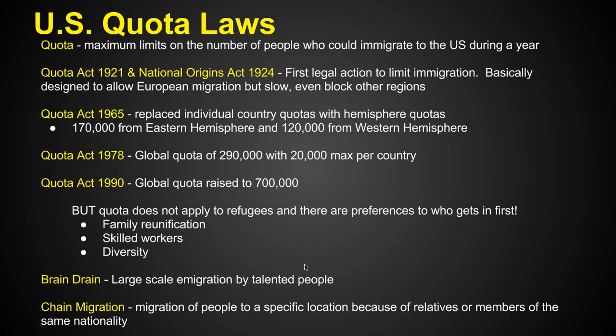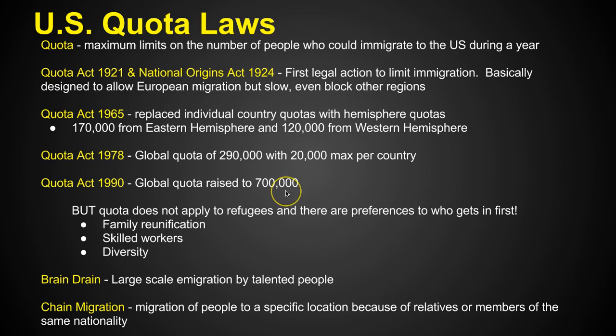Over the years you can see how this changed. In 1965 they changed it from quotas for certain regions and replaced it with hemisphere quotas. That was still biased — they allowed 170,000 people from the Eastern Hemisphere but only 120,000 from the Western Hemisphere, meaning Latin Americans were limited. In 1978 they changed it to a straight quota of 290,000 people, 20,000 max per country. Then in 1990 they raised it to a global quota of 700,000 people from all countries total.